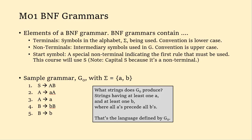Backus-Naur form grammars, or BNF grammars. The grammar in BNF form is made of production rules. We have a left-hand side, an arrow, and a right-hand side. If you have something on the left-hand side in your string, you can replace it with the right-hand side.